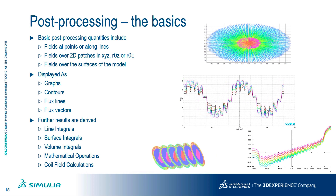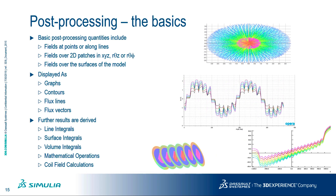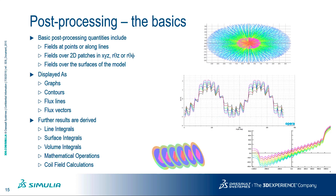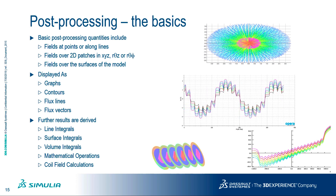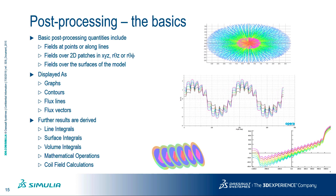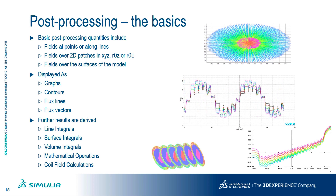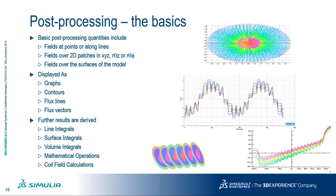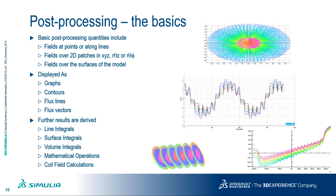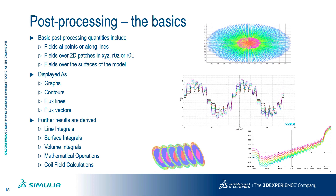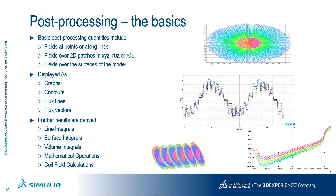Opera's solution process will generate a results file for post-processing, which is then read into the post-processor in order to view graphically the many results quantities of interest. The post-processor can be used to display available results in a number of ways — data can be evaluated at a single point, along a line, or over a 2D area. Here we see the basic results produced for an electromagnetics analysis. If the model is 3D, full 3D data can be used to assemble the display. Field data can be displayed as graphs, contours, flux lines or flux vectors, giving much more power and versatility than traditional testing or analytical calculations.